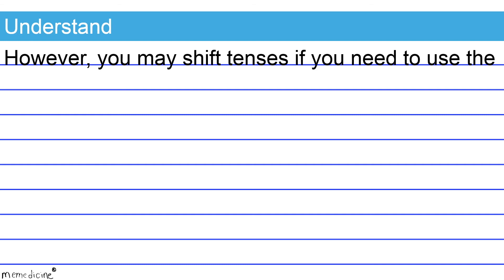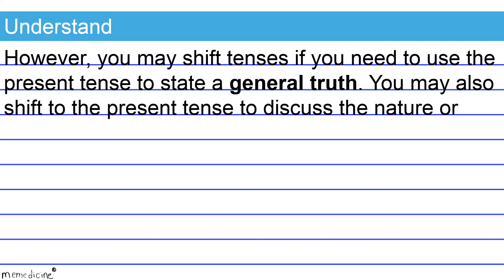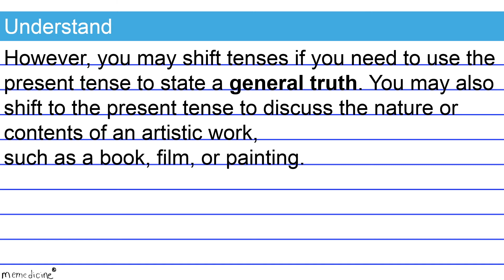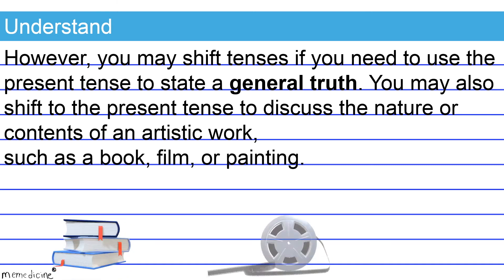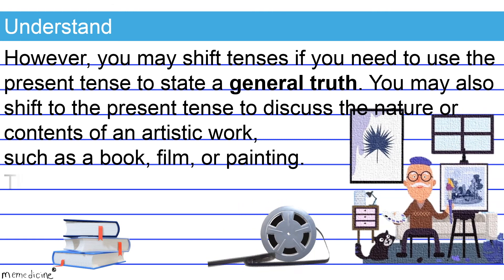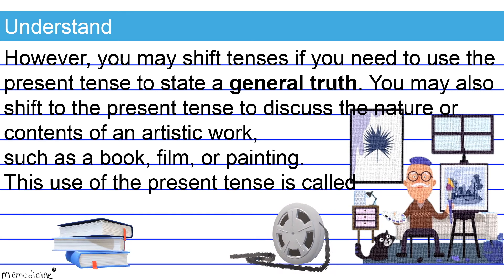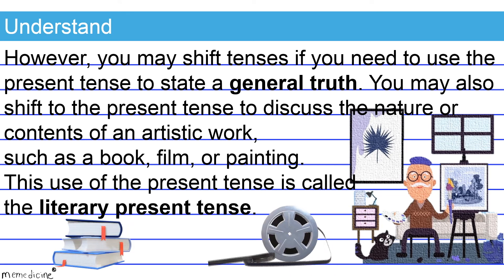However, you may shift tenses if you need to use the present tense to state a general truth. You may also shift to the present tense to discuss the nature or contents of an artistic work, such as a book, film, or painting. This use of the present tense is called the literary present tense.